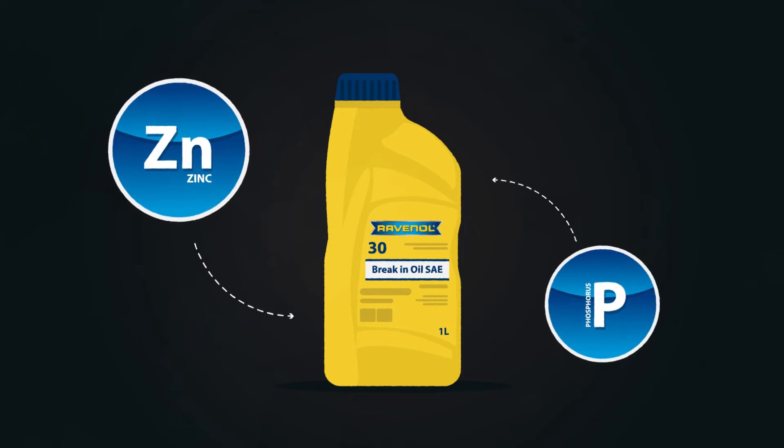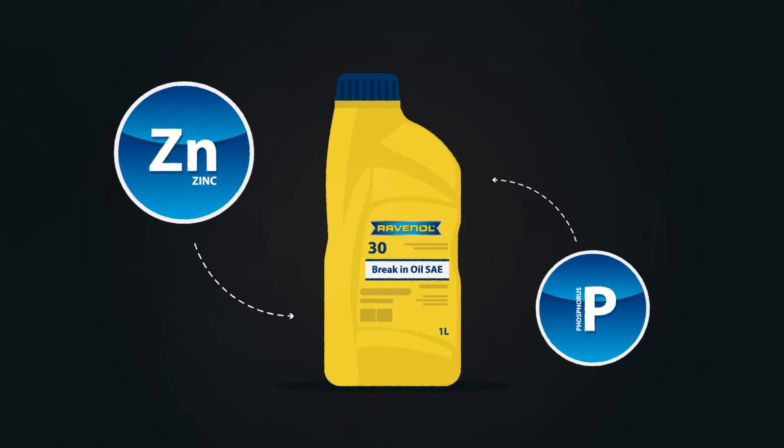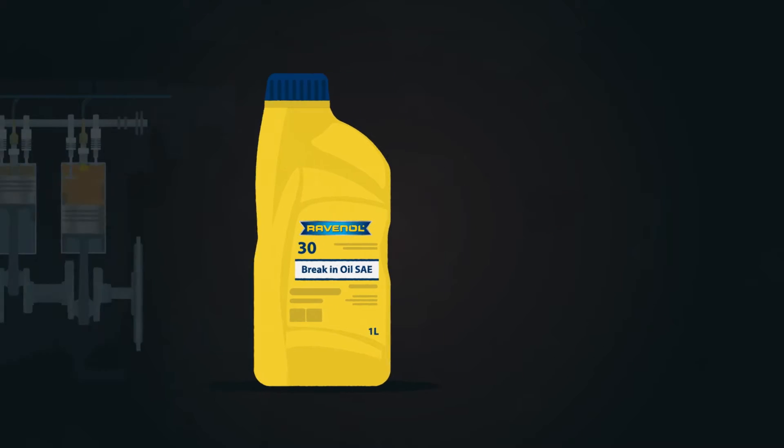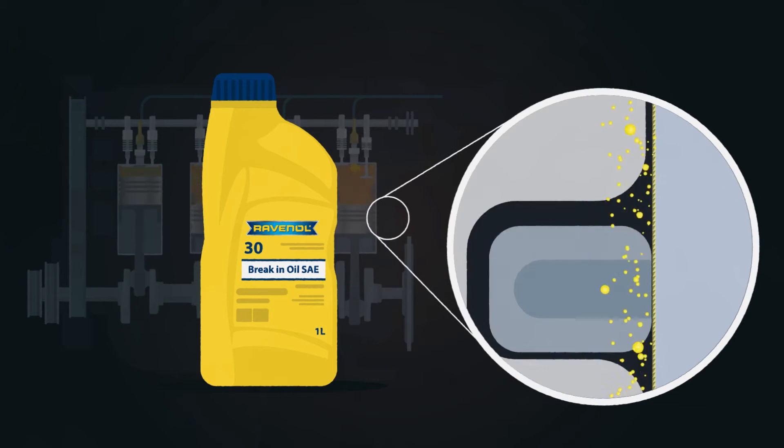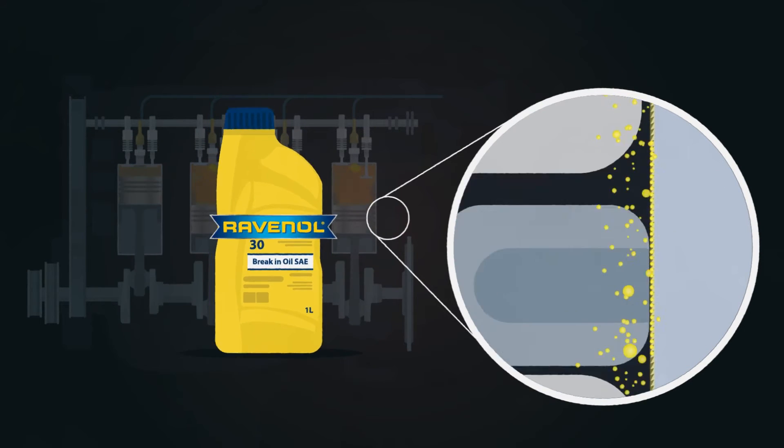The special Ravenol break-in oil contains additives which increase the zinc and phosphorus content. The special formula allows the parts to adapt to one another as effectively and safely as possible.